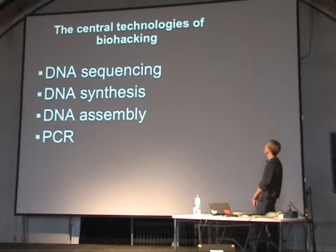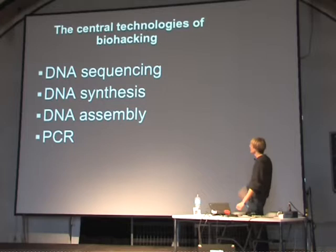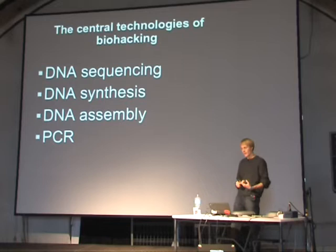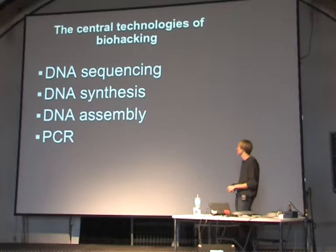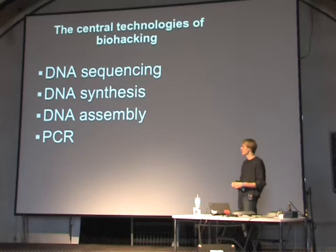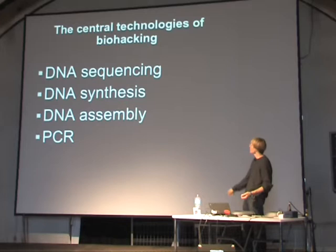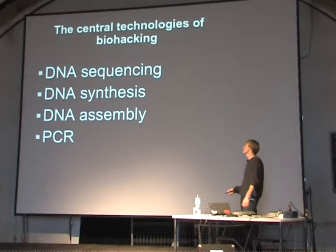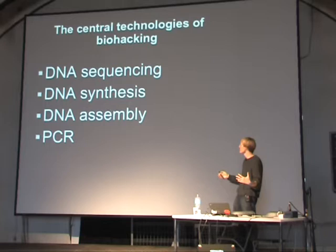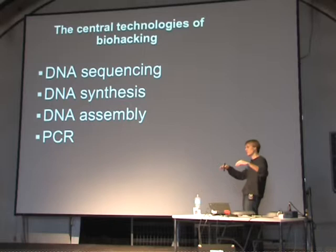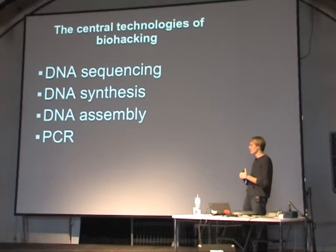Before getting into how to write the code, I'll talk about the basic technologies of biohacking: sequencing, synthesis, assembly, and PCR. Sequencing is taking some DNA or an organism and reading its DNA into a computer. Synthesis is the opposite — like DNA printing: you have DNA information on your computer and turn it into an actual DNA strand. Because synthesis is still expensive, you might have DNA lying around for different components, so you need DNA assembly to stitch pieces together into bigger systems. PCR lets you grab a specific piece of DNA from a larger piece and amplify it — get a lot of DNA from a little.